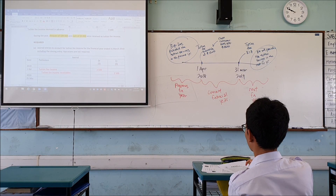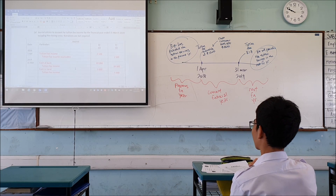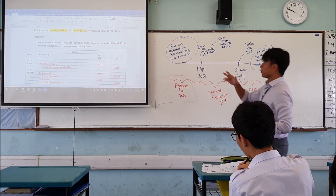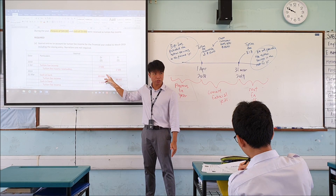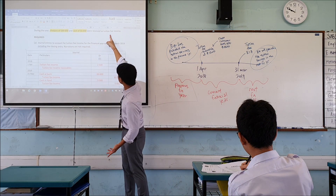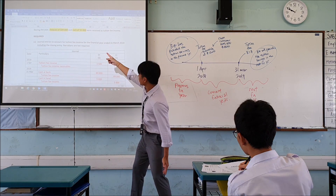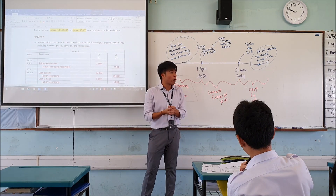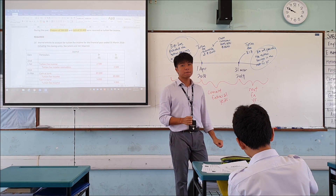Because of the checks and the cash, you will record these things. If you receive checks of $8,900, just debit cash at bank $8,900, and credit tuition fee income — because you are receiving the checks as tuition fee income, so you credit income. For the cash, debit cash in hand $5,000, and credit tuition fee income, because you are receiving the money because of tuition fee income.